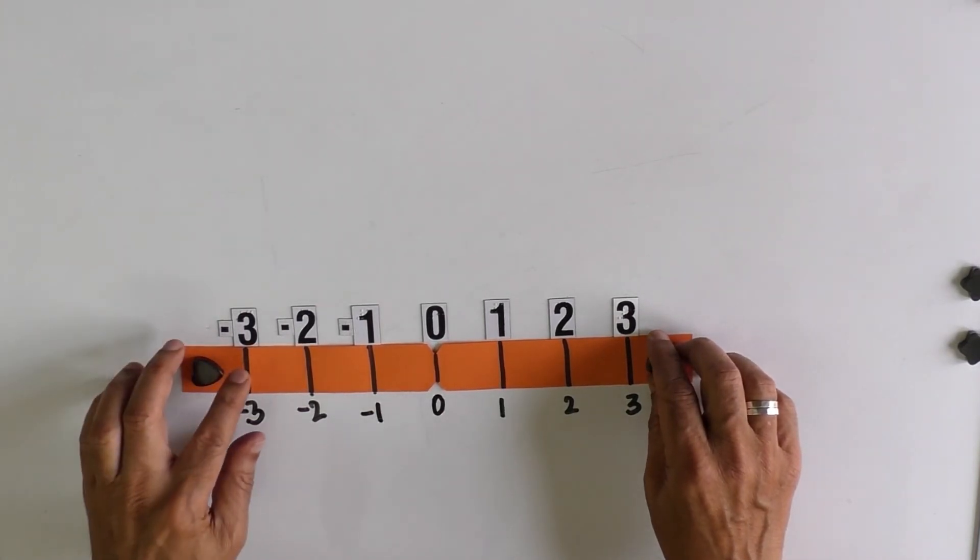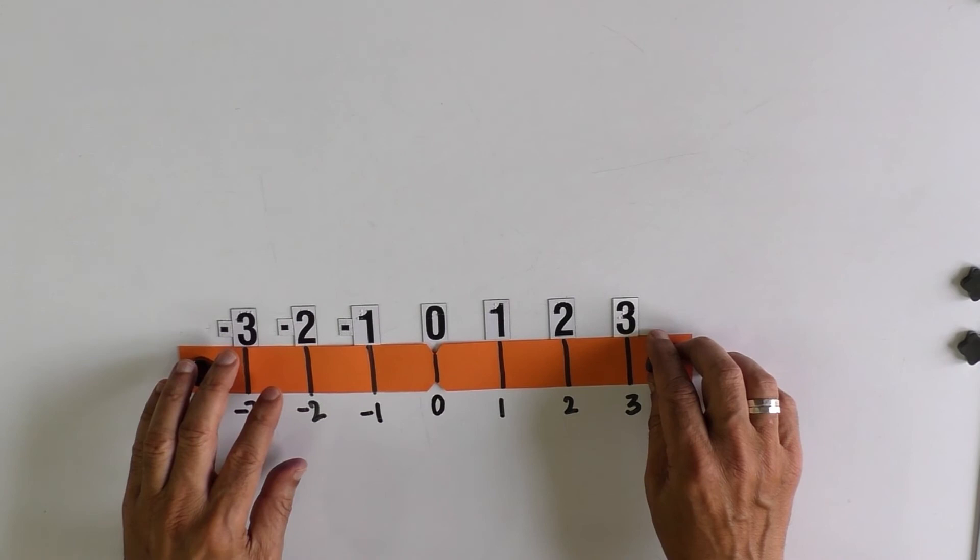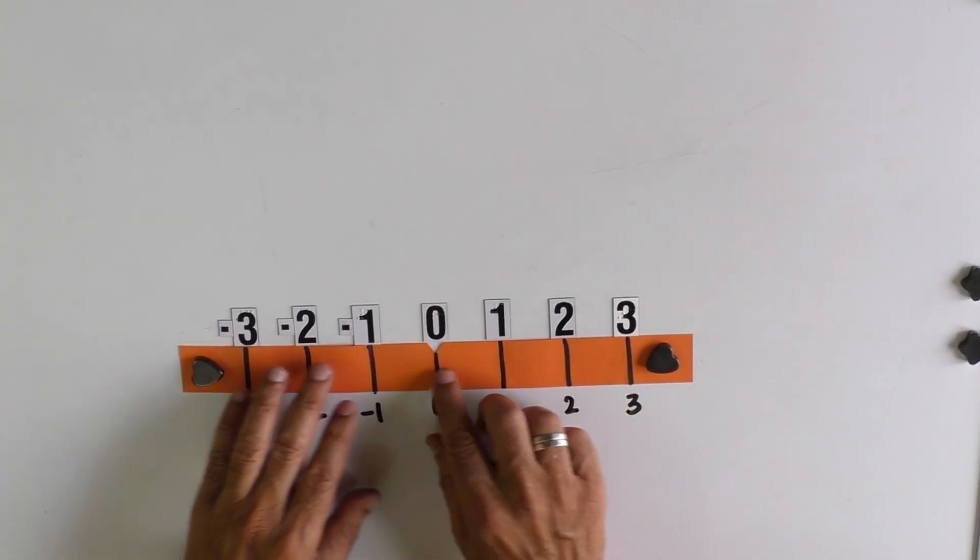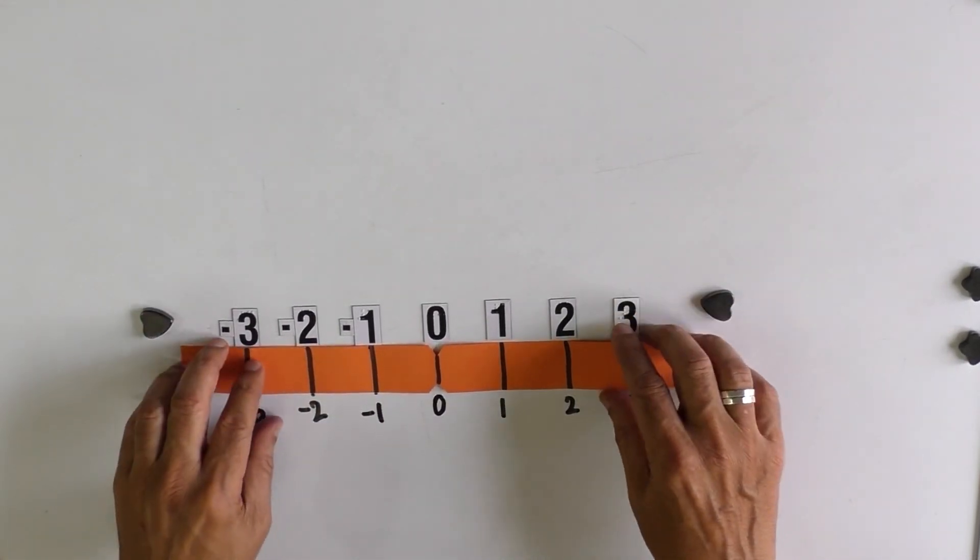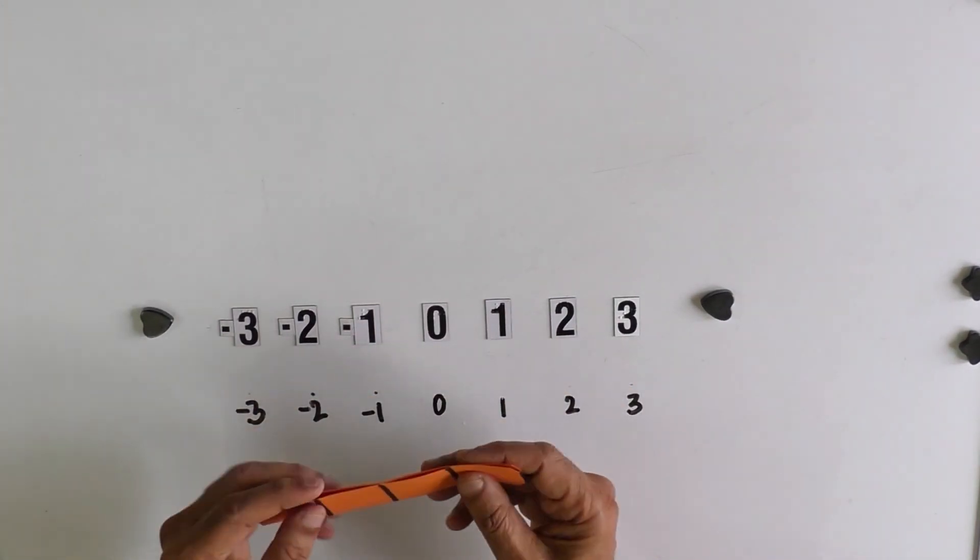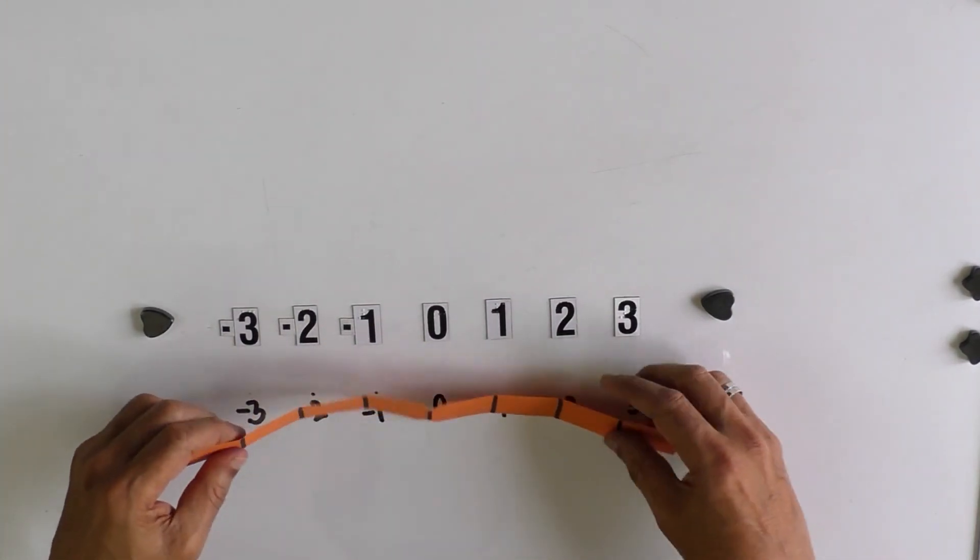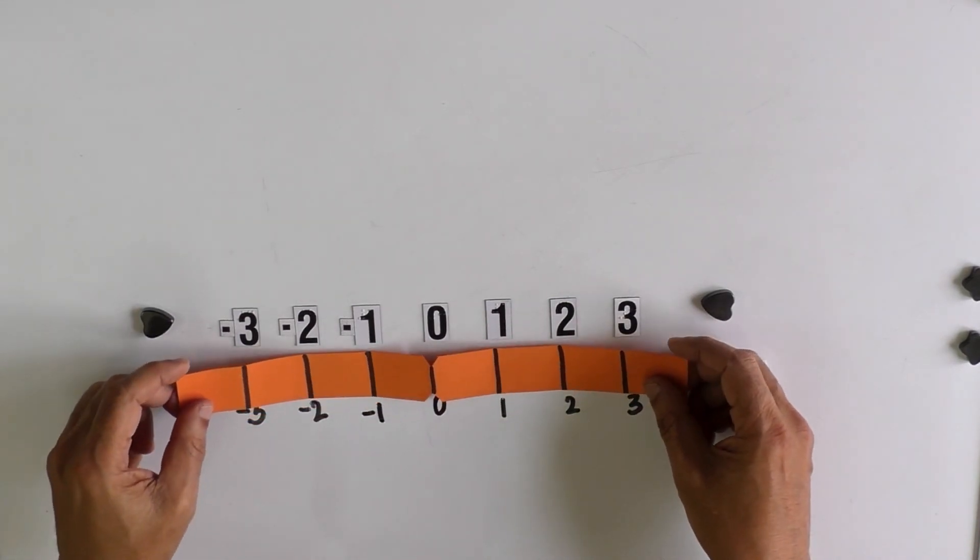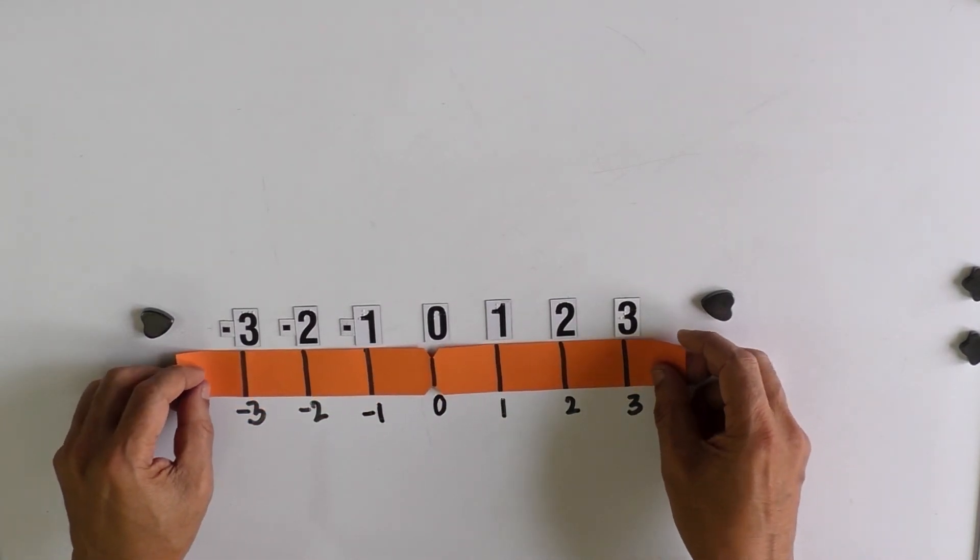We can use a readymade scale or readymade number line for teaching this concept, but this number line that we have prepared by folding the paper will help the child to understand the concept in a better way.